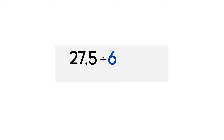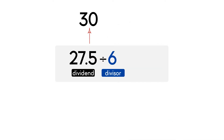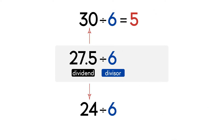Let's do another example: 27.5 divided by 6. The compatible number greater than the whole number part of the dividend is 30. The compatible number less than the whole number part of the dividend is 24. 30 divided by 6 equals 5, and 24 divided by 6 equals 4. So the actual quotient is between 4 and 5 — it is approximately 4.5.